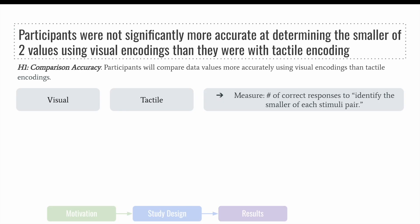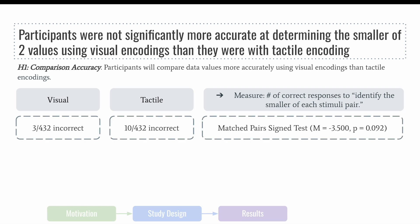In the results, we found that participants were not significantly more accurate using visual encodings than they were with tactile encodings. Although participants had a slightly greater number of accurate answers in the visual condition compared to the tactile using a matched pair sign test, we found that this difference was not significant.